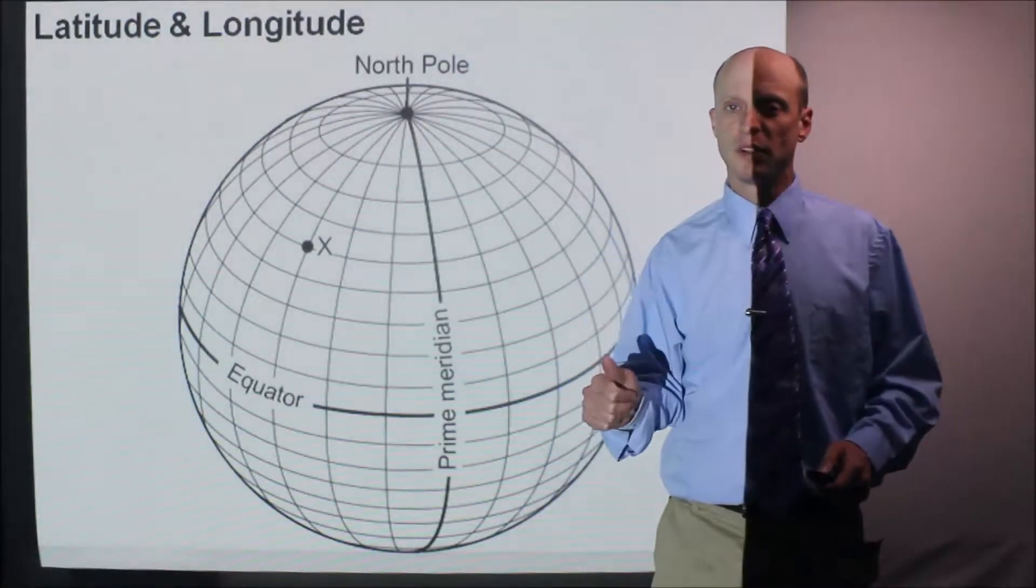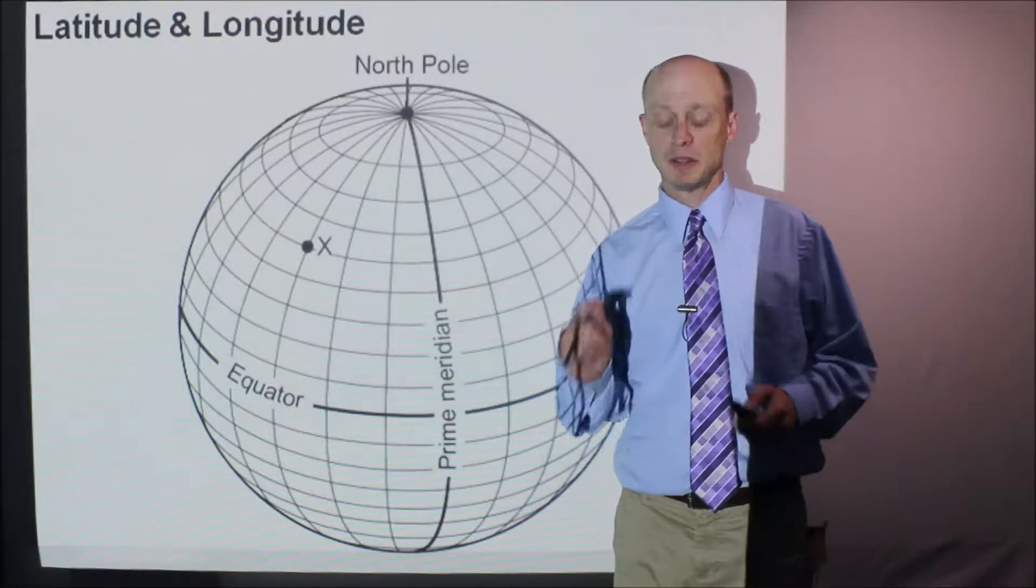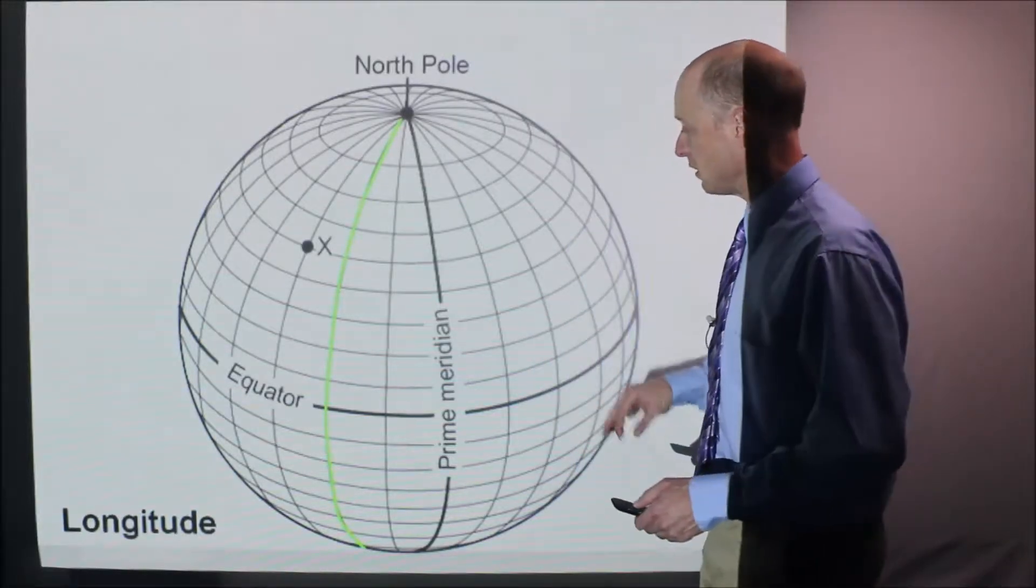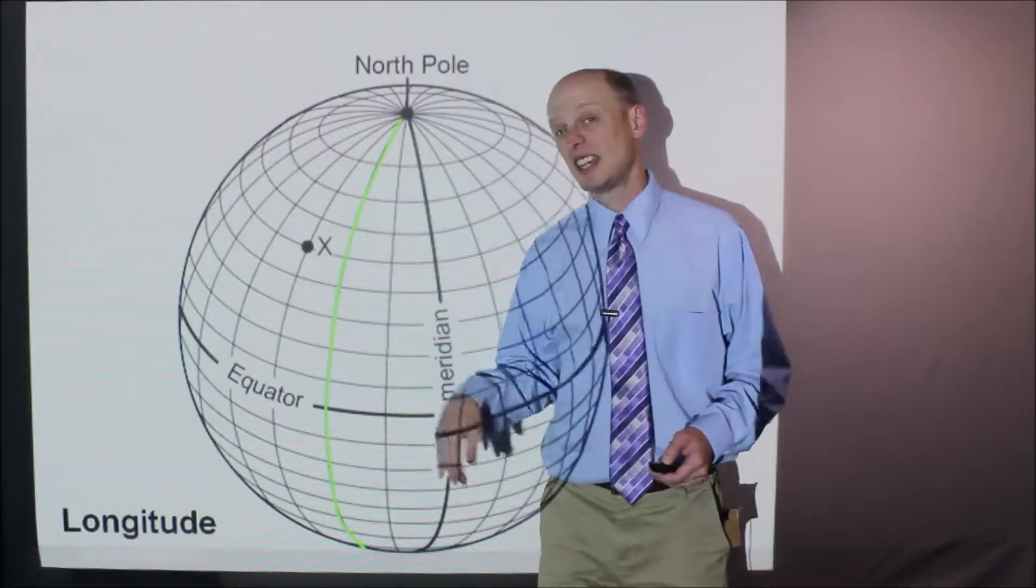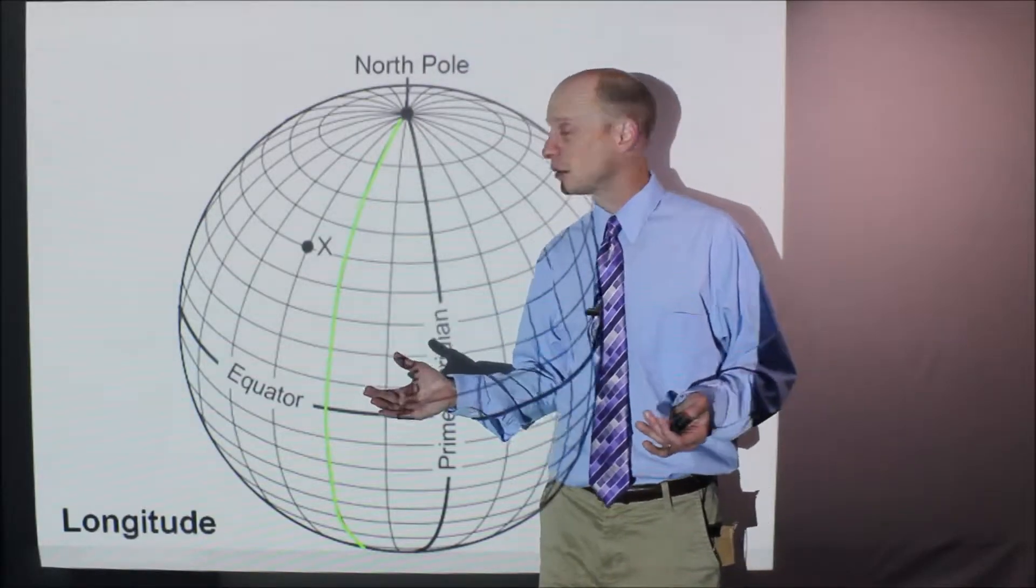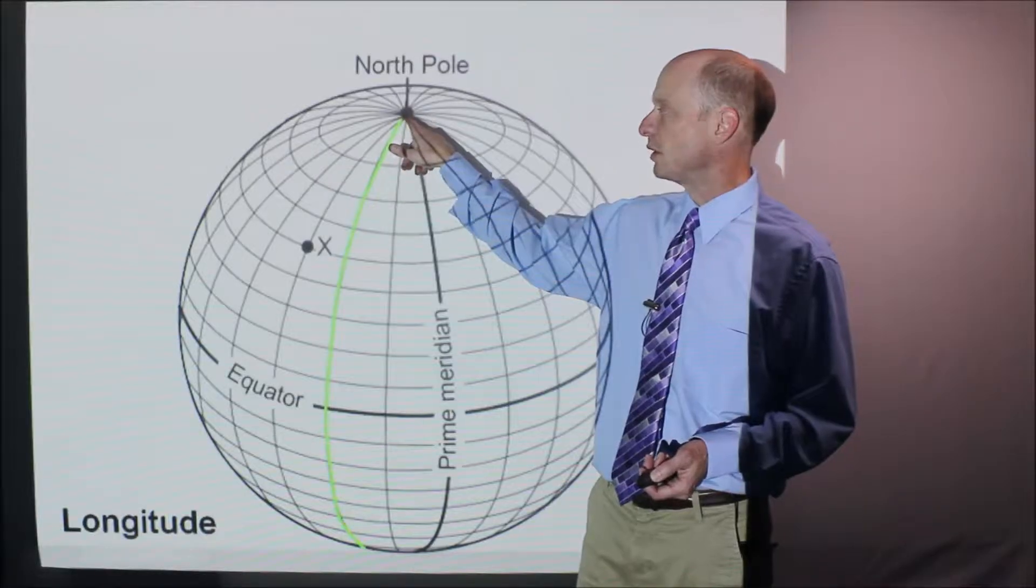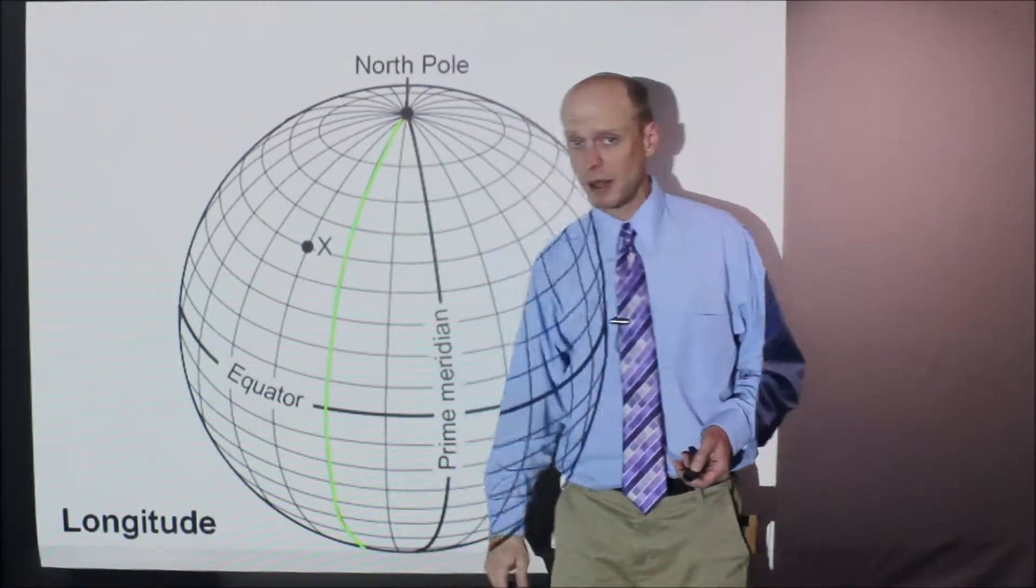Let's start with latitude and longitude. Really important to know these, be able to use them and know the difference between them. First up, this green line I have shown here is a line of longitude. You could say it kind of goes up and down when you're looking at the globe like this. All the longitude lines will sort of all go through the North Pole. They all go through the South Pole as well.